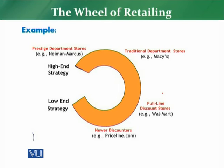For the trading up phase, we have full-line discount stores like Walmart and traditional departmental stores. At the high end, we have prestige department stores. These four examples illustrate the wheel of retailing: starting from the entry phase with a new price-based discounter, moving through mid-tier, and ending with a prestigious departmental store offering premium products, excellent experience, and excellent facilities.